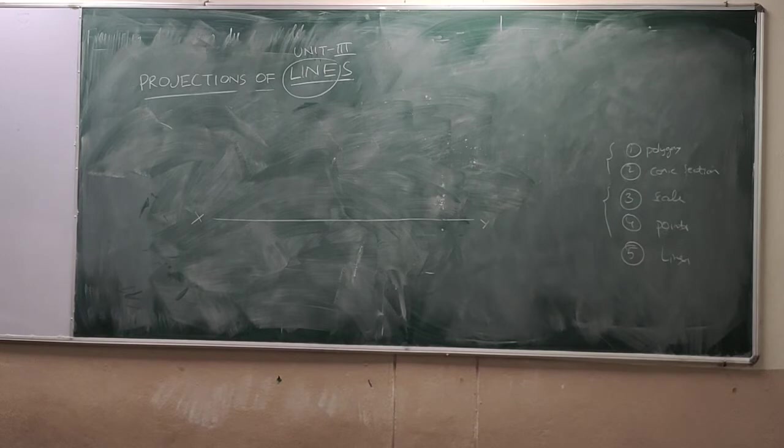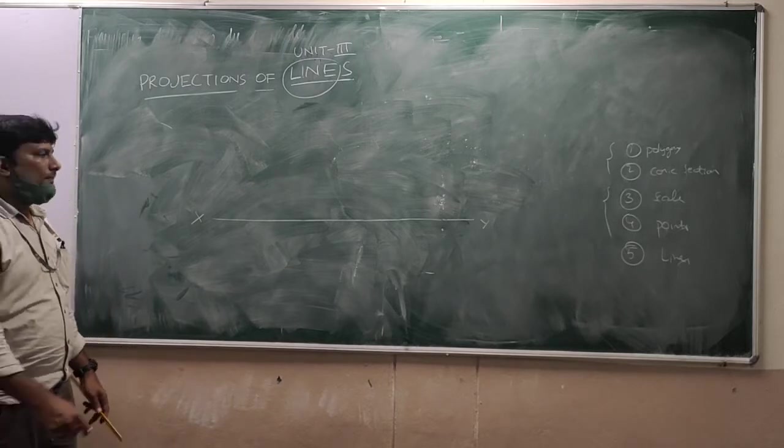What will be given? The line is 50mm long, is lying in VP, and 40mm above HP. What are we going to be doing? Then the next step. You know.